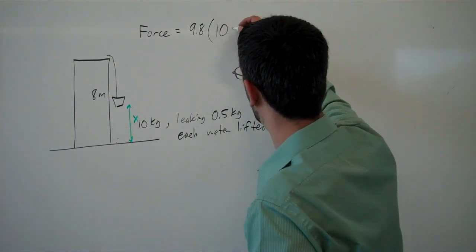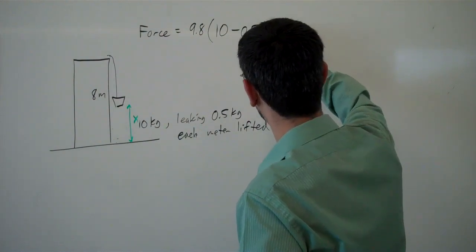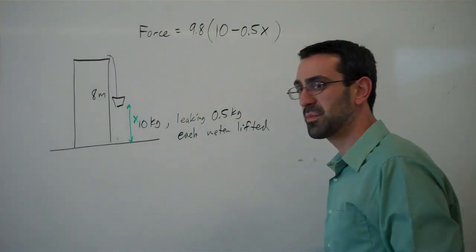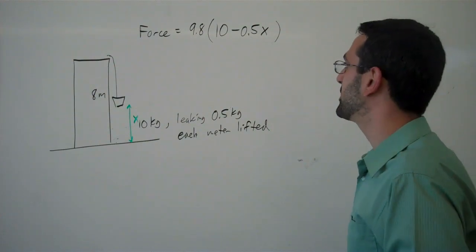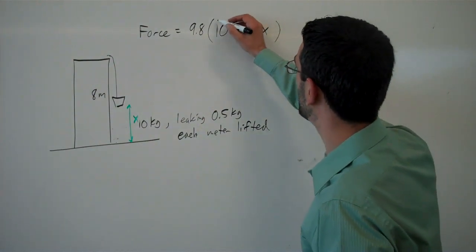So we started with 10. We've lost 0.5 kilograms for each meter lifted. So we multiply that by the number of meters that we've lifted it to find how much mass is remaining. So this is remaining mass.